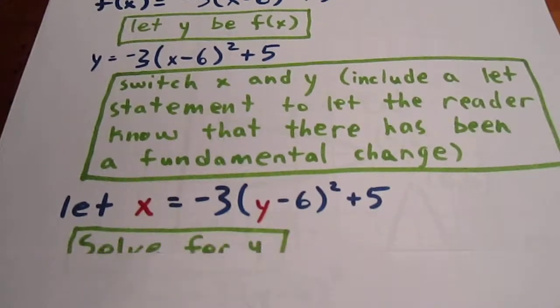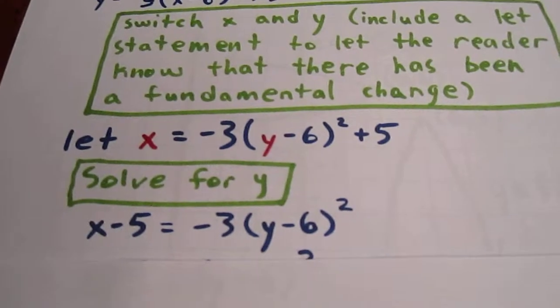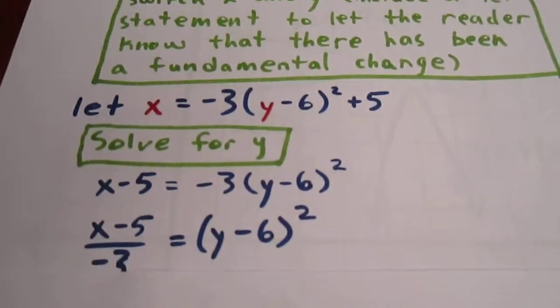We can now solve for y. We maintain our order of operations integrity. Subtract 5 from each side, divide each side by negative 3.